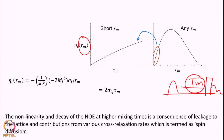For longer mixing time, after a certain point it falls rapidly. This decrease in NOE enhancement is due to a phenomenon called spin diffusion — meaning the spin loses its magnetization to other spins and you do not see as much enhancement. In the short Tm regime it is linear, and that is typically used for measuring distances in molecules, macromolecules, or biomolecules. The non-linearity at higher mixing time is a consequence of leakage to the lattice and cross-relaxation.